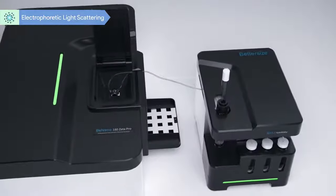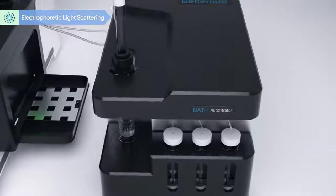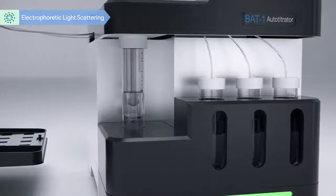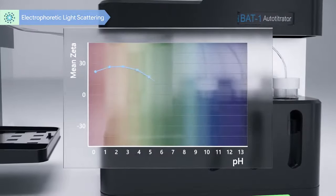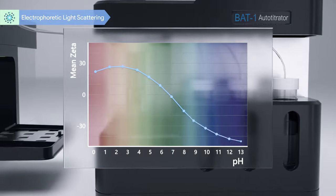The BAT1 autotitrator is designed to be used with B-Nano, performing automatic titration operation and offering a pH dependent zeta potential plot.